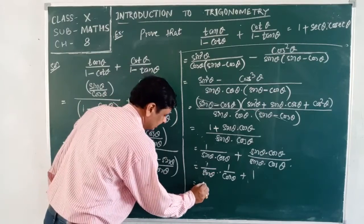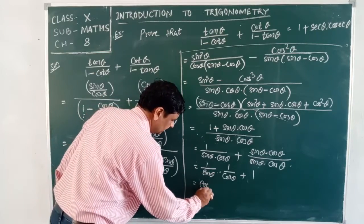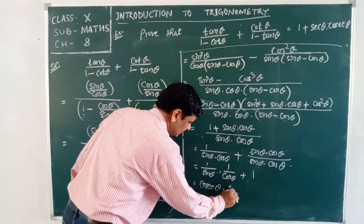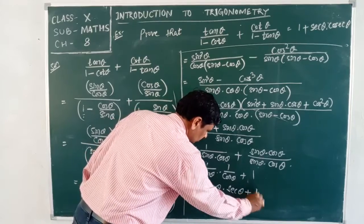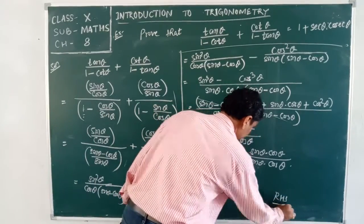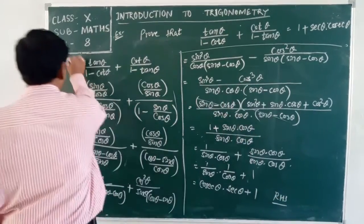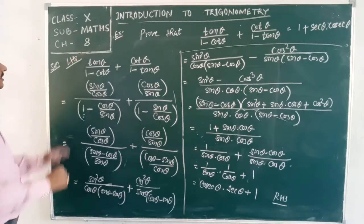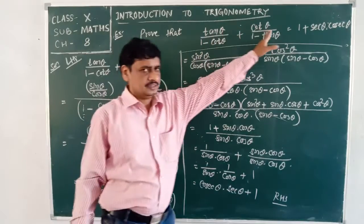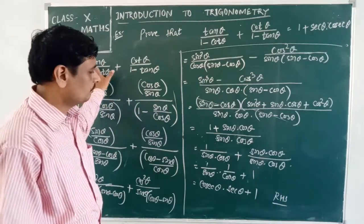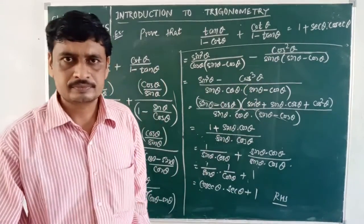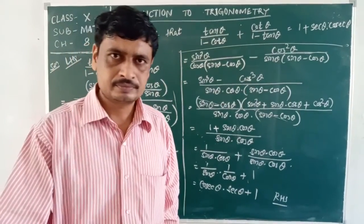Splitting the fraction: 1/(sin θ · cos θ) + sin θ · cos θ/(sin θ · cos θ) = 1/sin θ · 1/cos θ + 1 = cosec θ · sec θ + 1 = 1 + sec θ · cosec θ, which equals the right-hand side. The identity is proved.